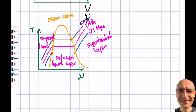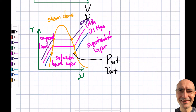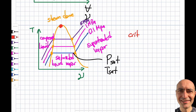An important observation: at 0.1 MPa, the phase change occurs at 100°C. The lines inside the steam dome are isobaric lines — constant pressure lines — meaning both pressure and temperature are constant throughout the mixture region. These are referred to as P_sat and T_sat, the saturation pressure and temperature.